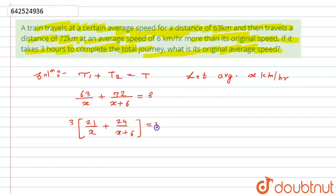Now this 3 will get cancelled. I will do the denominator common as x in bracket x plus 6, so this will become 21(x plus 6) plus 24x.